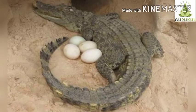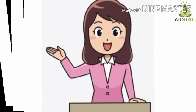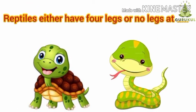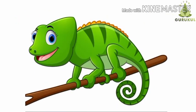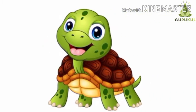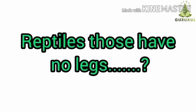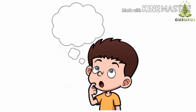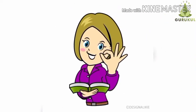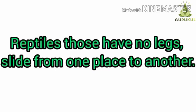Some reptiles wrap their bodies around the eggs for protection. Reptiles either have four legs or no legs at all. Chameleon, lizard, and tortoise have four short legs, and with the help of them they move from place to place. Reptiles that have no legs — like snakes — slide from one place to another.